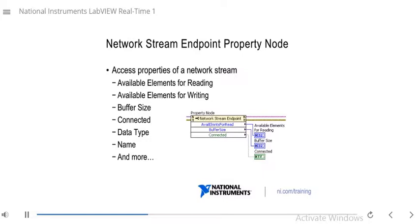There is also a network streams property node that you can place down to access other properties of your network stream. Using this property node, you can access the available elements for writing, available elements for reading, the current buffer size, and whether the endpoints are connected. These properties are a great way to monitor the status of your network stream.